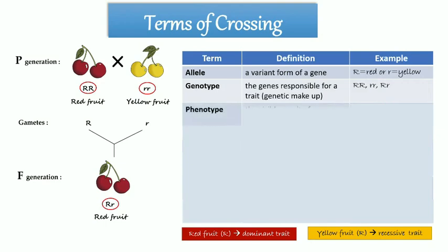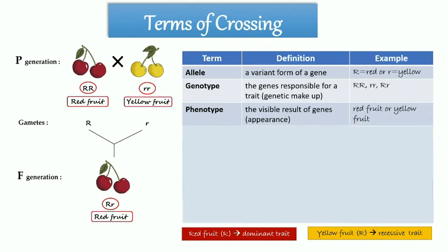Phenotype is the visible result of genes, or appearance. Example, red fruit for big R big R, or big R small r, and yellow fruit for small r small r.